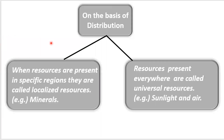On the basis of distribution, when resources are present in specific regions, they are called localized resources. Resources present everywhere are called universal resources. All minerals are localized resources — we know where they are available. For example, iron deposits in Bihar, coal deposits in Jharkhand, coal or gold fields in Karnataka are examples of localized resources. Sunlight, air, and wind are resources found everywhere and are called universal resources.